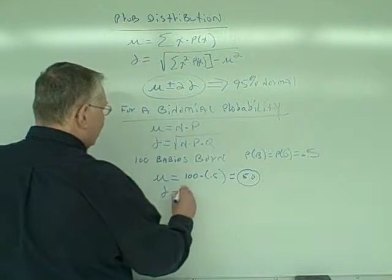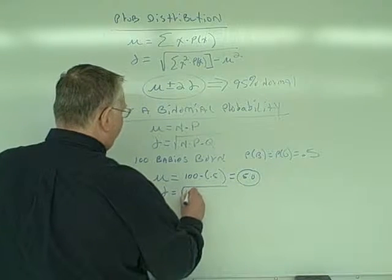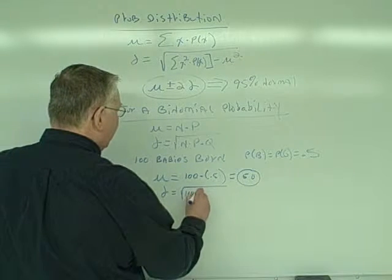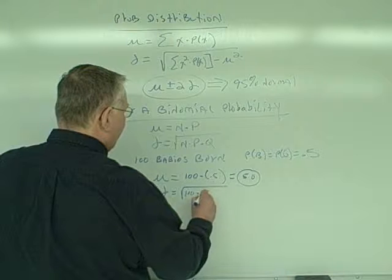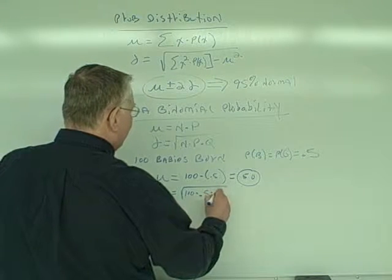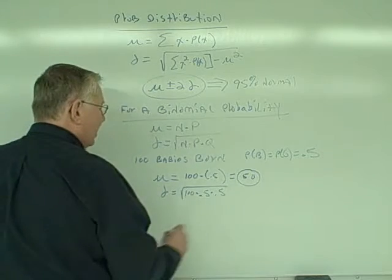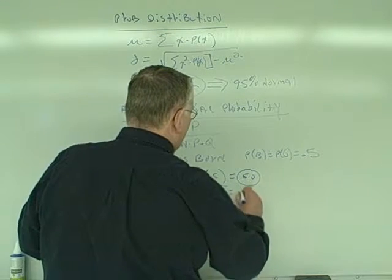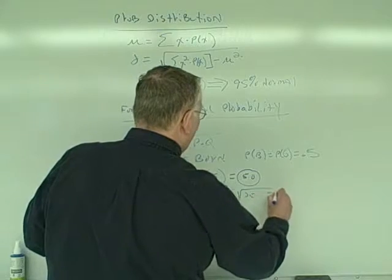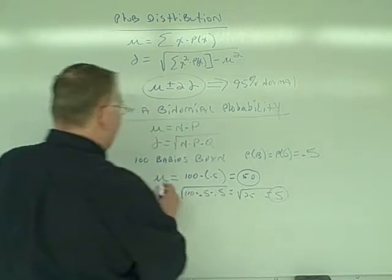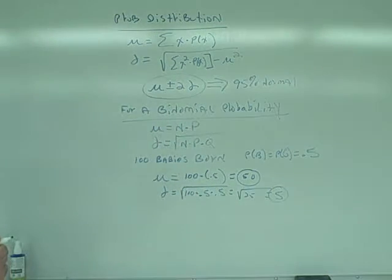The standard deviation is going to be the square root of n, 100 times p, the probability of a boy, times q, the probability of not a boy. So that gives me the square root of 25 or 5 as the standard deviation.